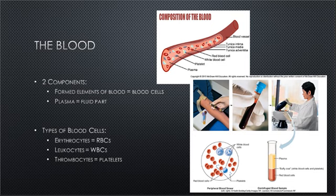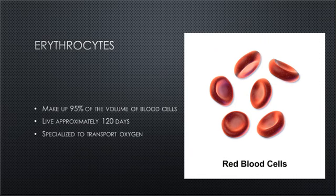There are different types of blood cells. We have erythrocytes, which are commonly called red blood cells, abbreviated RBC. Leukocytes, which are our white blood cells, abbreviated WBC. And thrombocytes, which are our platelets. Our red blood cells, or erythrocytes, are biconcave discs that contain one-third oxygen-carrying hemoglobin by volume. The number of red blood cells is the measure of the blood's oxygen-carrying capacity. Red blood cells make up 95% of the volume of blood cells — they are the most abundant. They live approximately 120 days and are specialized to transport oxygen.